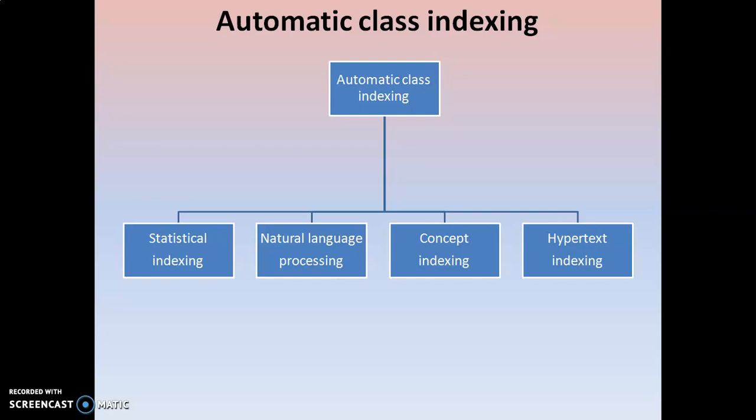In the previous video, I have given the introduction of the automatic class indexing. Now, what are the various types in automatic class indexing? The automatic class indexing can be divided into 4 different types: the first one is statistical indexing, the second one is natural language processing, the third one is concept indexing, and the fourth one is hypertext indexing. We need to discuss all these kinds of indexing one after another.